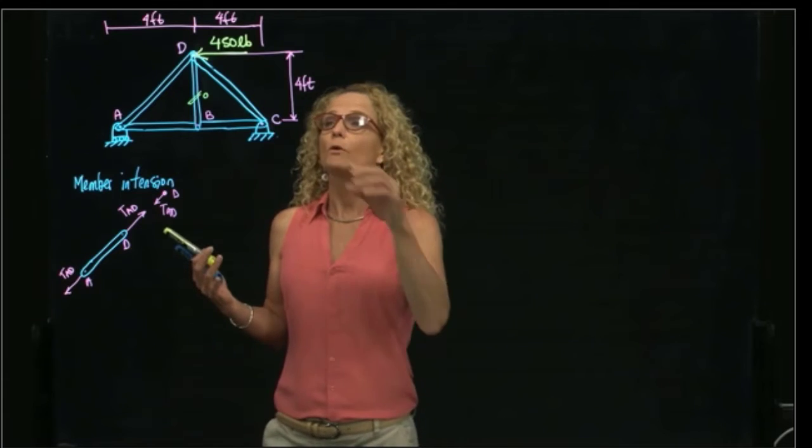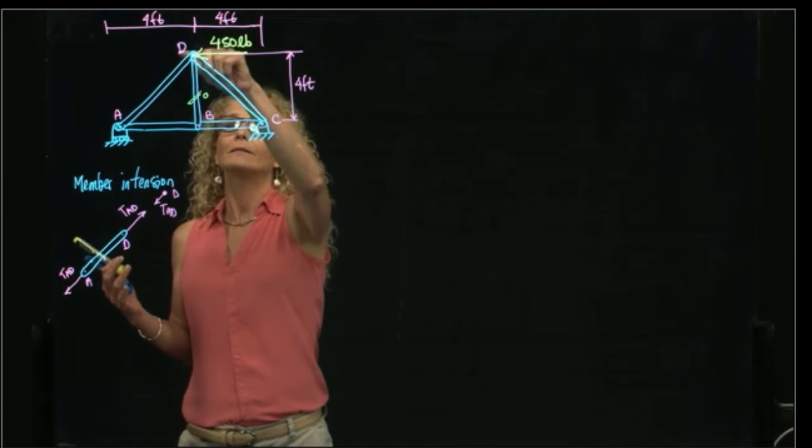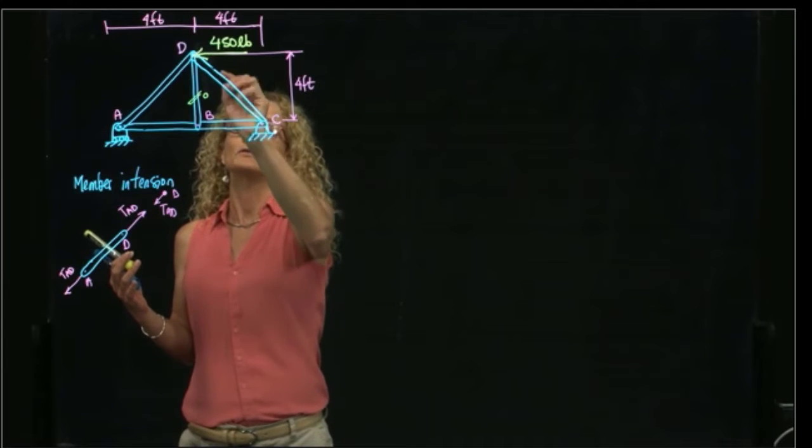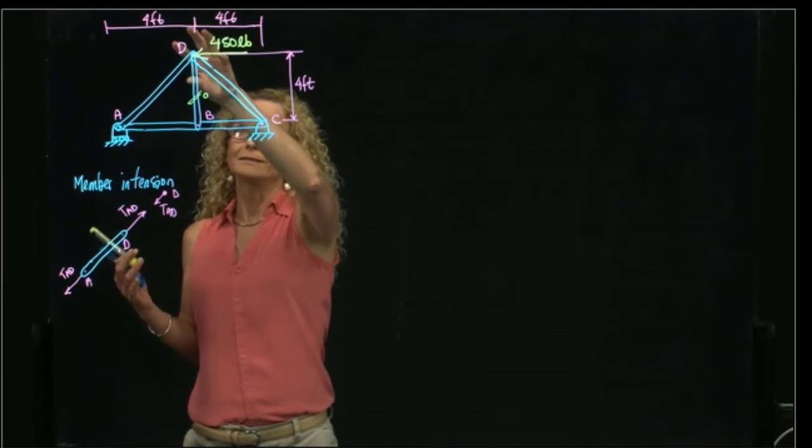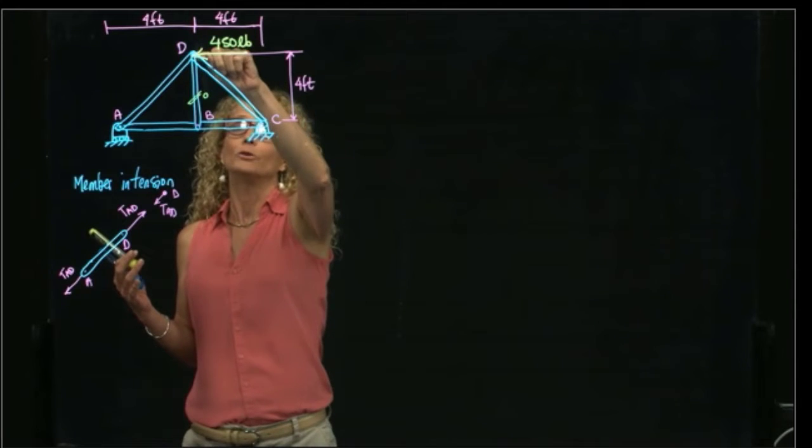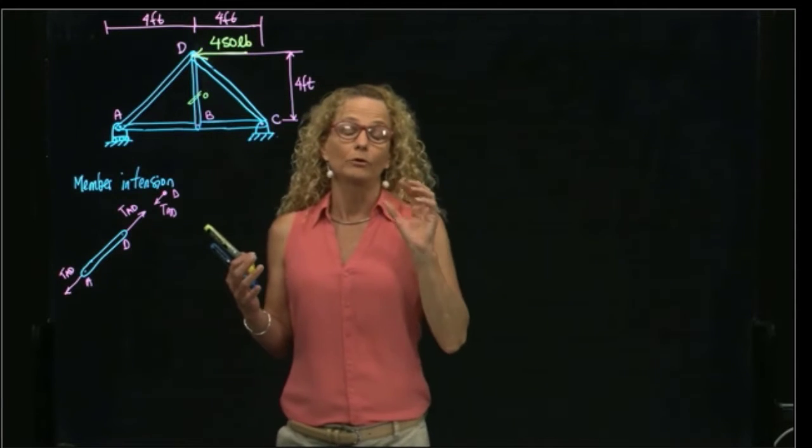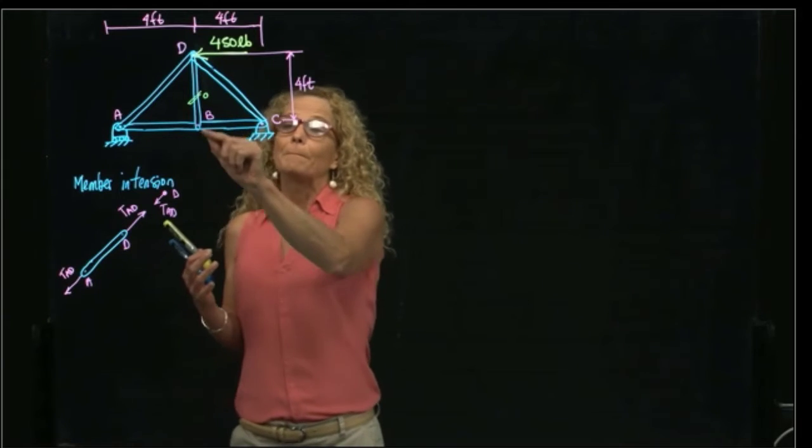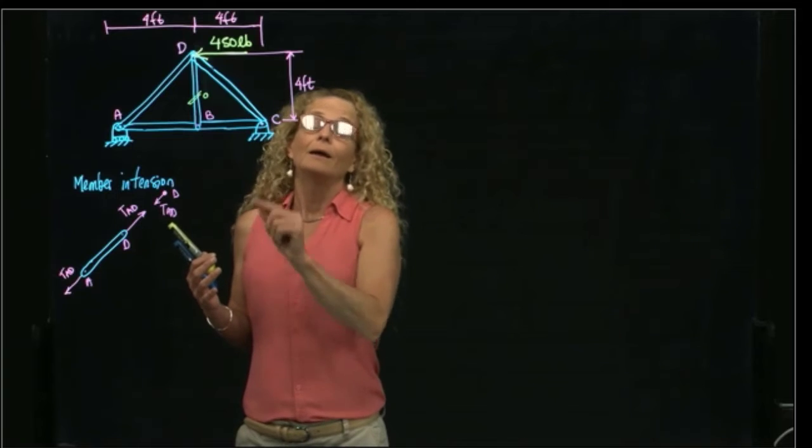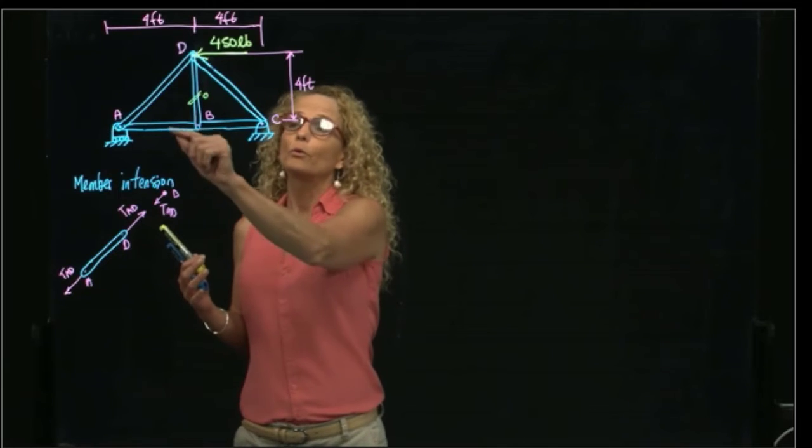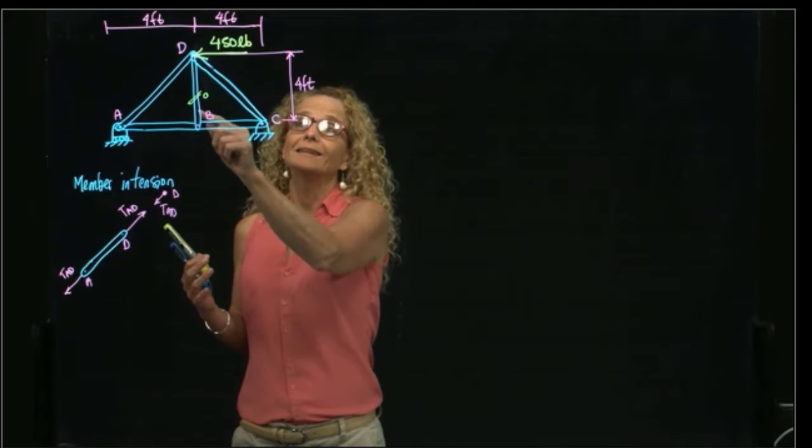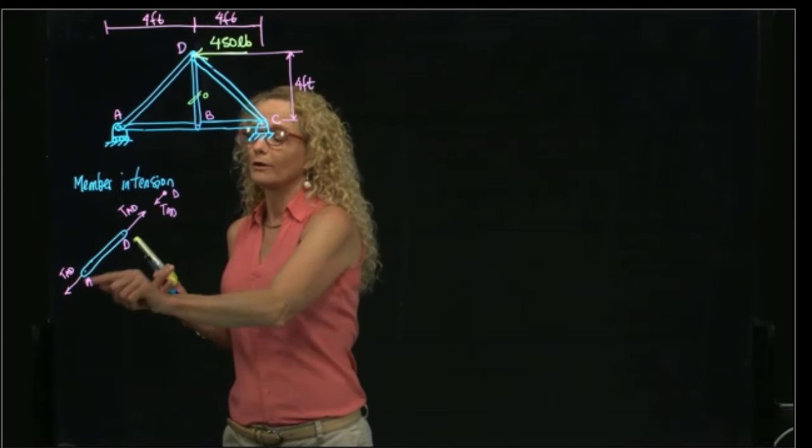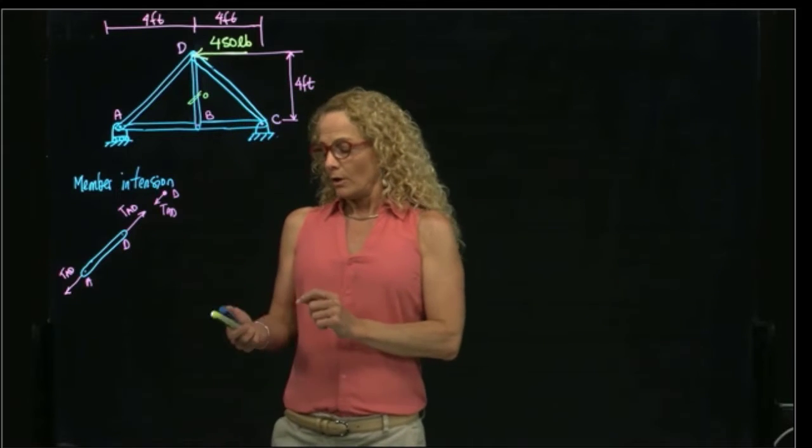Some students ask me, well, if I analyze this pin, then I have three that are non-collinear and then a force. It's true. If you analyze this pin over here, D, the joint D, you will not be able to say that this member is zero. But when you analyze joint B, that is the rule: when you have two collinear and one non-collinear, that is zero. Therefore, it's zero in the other joint too, because the forces are equal.